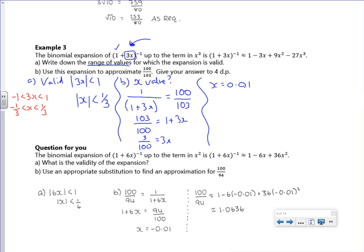So my expansion is 1 - 3 lots of 0.01 + 9 lots of 0.01 squared - 27 lots of 0.01 cubed. It's quite kind of theoretically messy.